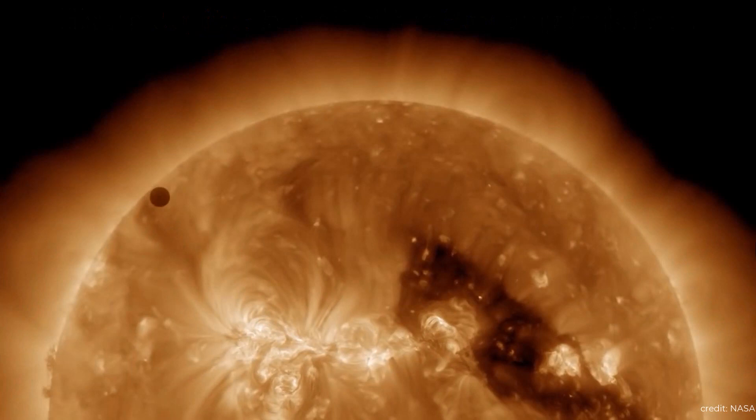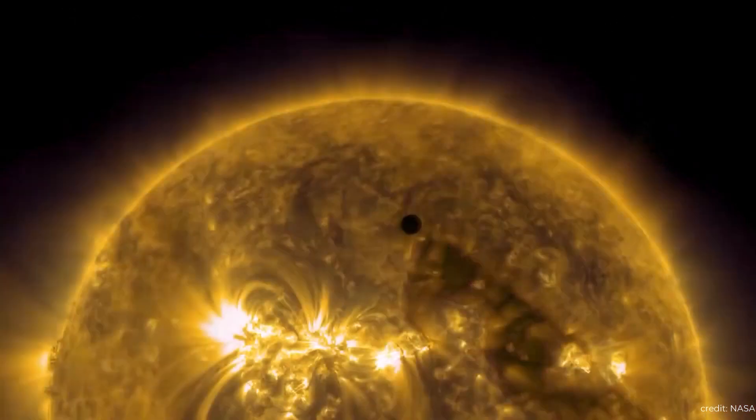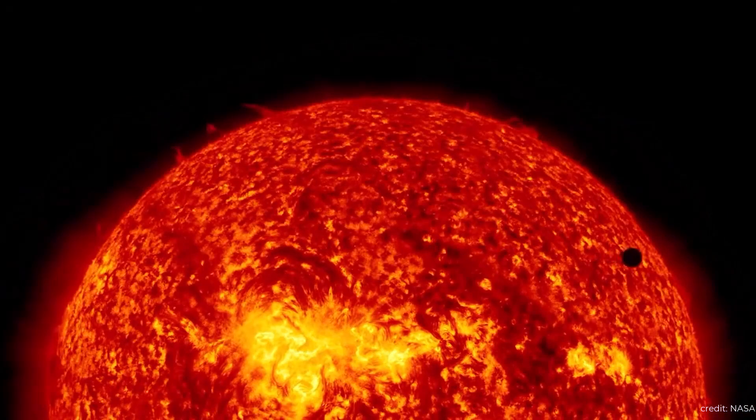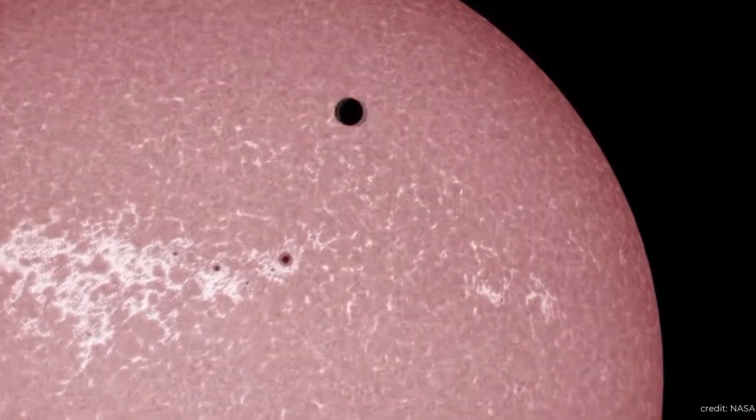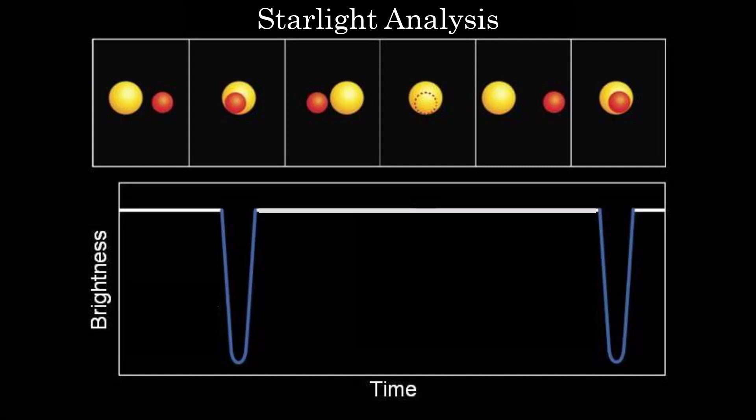With exoplanets, if they just so happen to be orbiting in a plane that causes them to intersect our line of sight to their host star, we can indirectly detect their transit. Telescopes targeted on the star measure its luminosity or brightness to dip due to an exoplanet passing in front of it, and subsequently blocking out some of the light. When this happens, we can record and plot a graph of how the star's luminosity changes as time goes on.